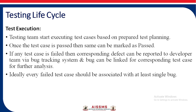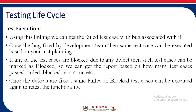Test execution: The testing team starts executing the test cases based on the prepared test plan. Once a test case is passed, it can be marked as passed. If any test case is failed, the corresponding defect is reported to the developer team via a bug tracking system, and the bug can be linked to the corresponding test case for further analysis. Ideally, every failed test case should be associated with at least one bug. Once the bug is fixed by the development team, the same test case can be executed again based on the test plan.